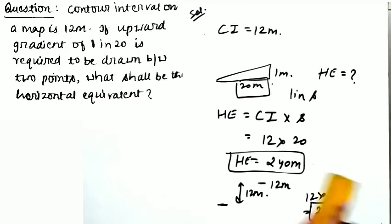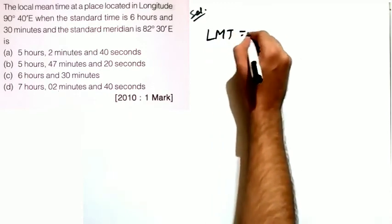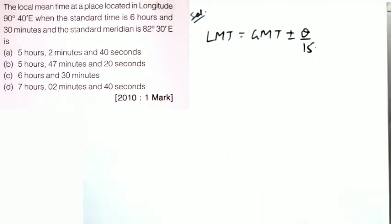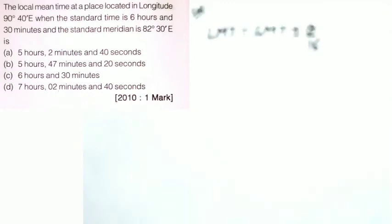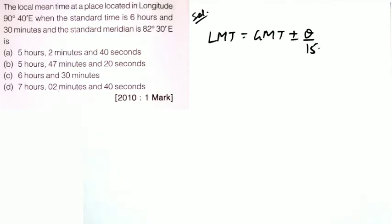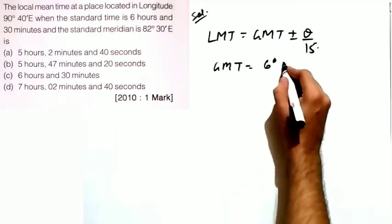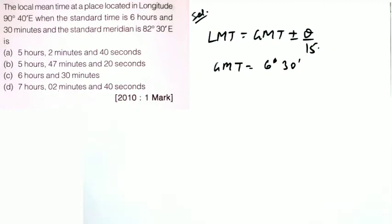The next question is based on LMT and GMT. The formula is: LMT = GMT ± θ/15, where GMT is Greenwich Mean Time (standard time) and θ is the angular difference between the standard meridian and the local meridian. A place is located at longitude 90°40' East. The GMT given is 6 hours 30 minutes, and the standard meridian SM is 82°30' East.